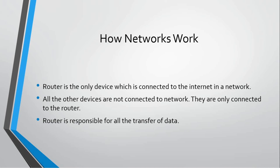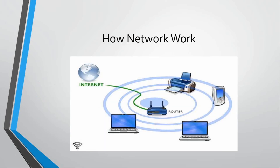There are two or three important things I want you to keep in mind. In a network, the router is the only device which is connected to the internet. For example, when I turn on my laptop and connect to a Wi-Fi network, my laptop is not directly connected to the internet — my laptop is connected to the router, and the router is connected to the internet. All other devices are only connected to the router, and the router is responsible for the transfer of all the data.